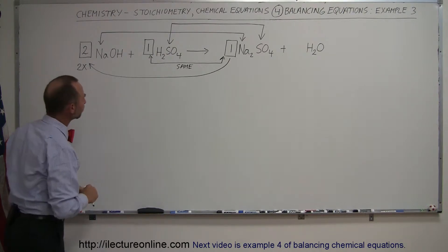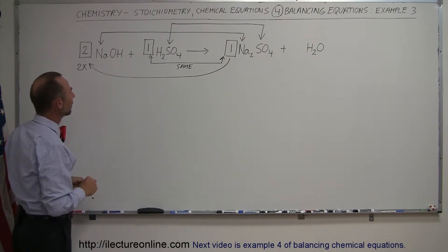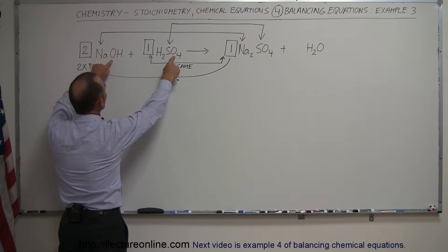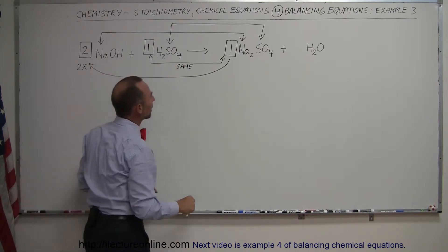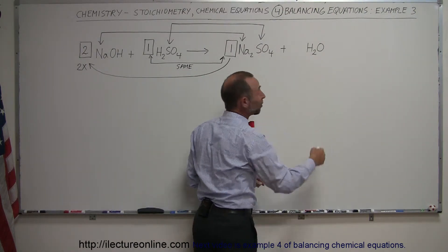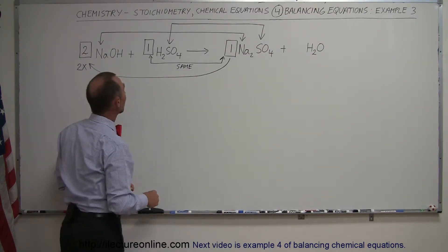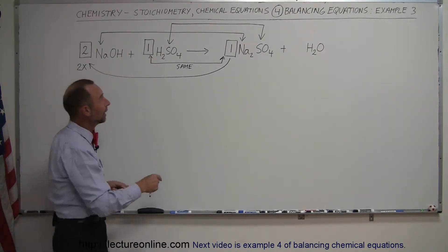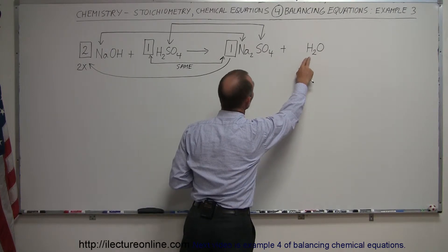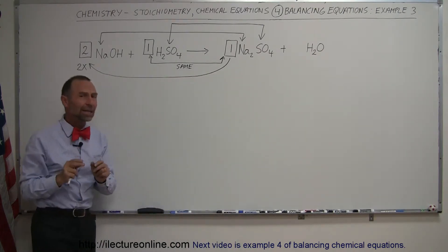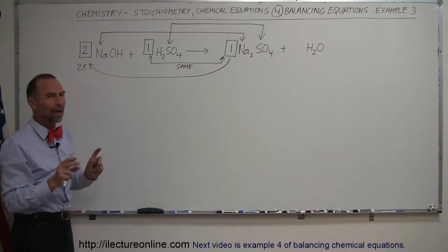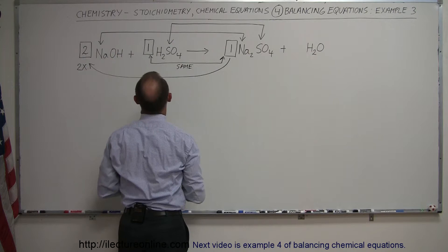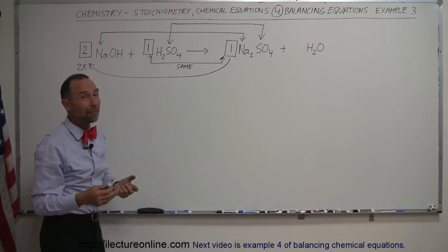We're getting closer. Now it gets a little more difficult — oxygen appears twice on the left side and twice on the right side. Hydrogen appears twice on the left side but only once on the right side in water, which makes it a little easier. So the next thing we'll deal with is hydrogen, since it only appears once on the right side.